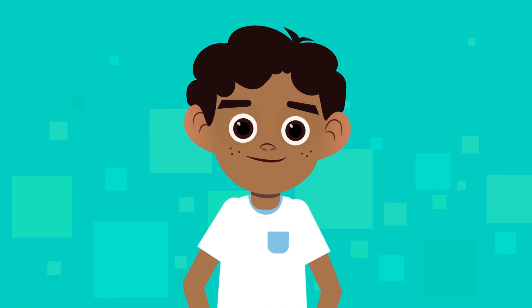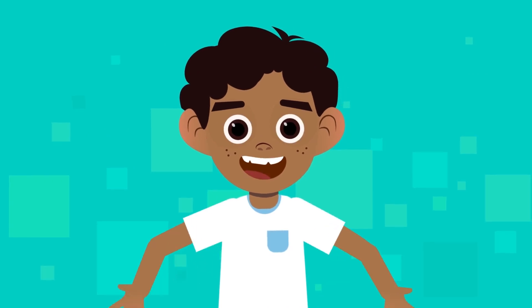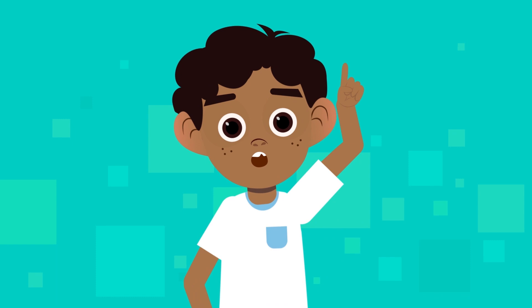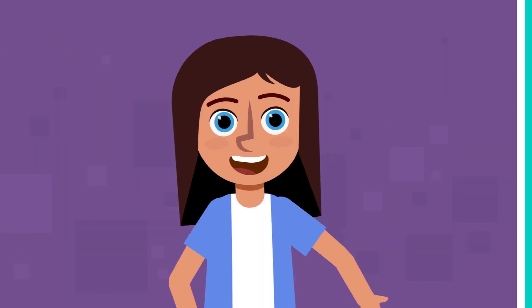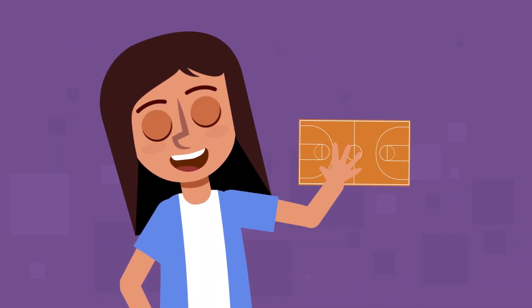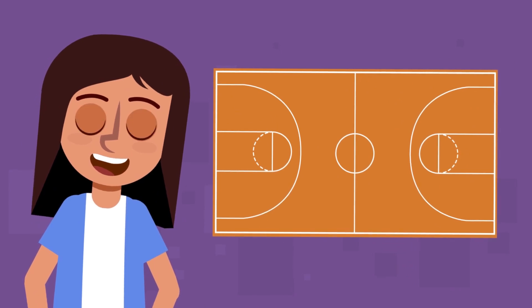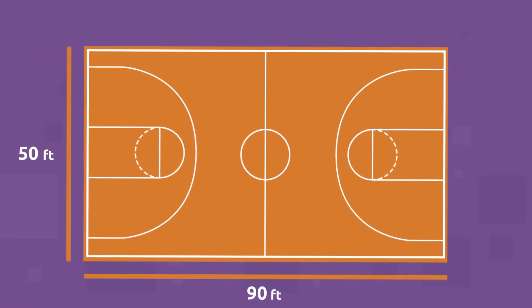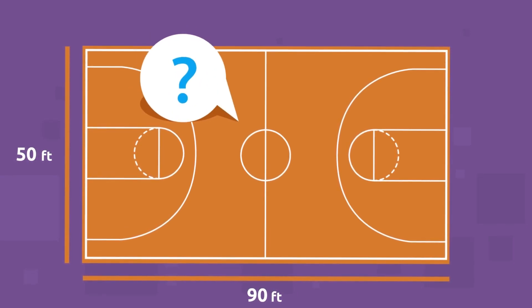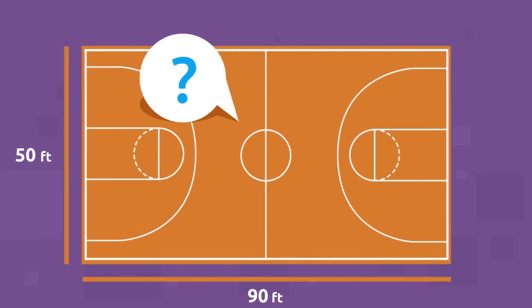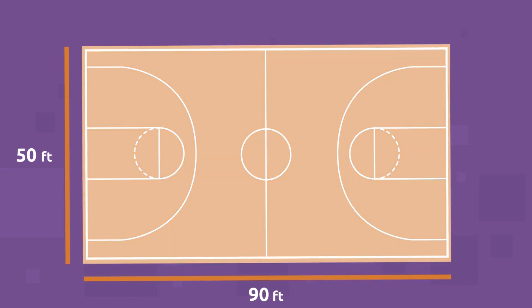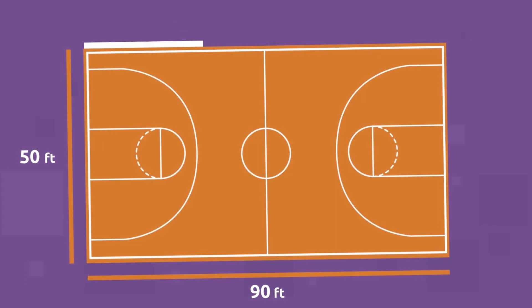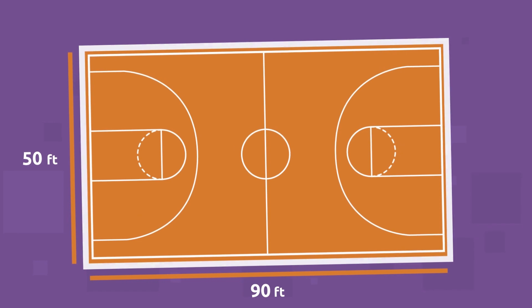Knowing the area of a rectangle is very important. Let's take a look with a real-life example. The school principal wants to build a basketball court in the playground. The court has a length of 90 feet and a width of 50 feet. What is the area she will need to build the basketball court? To find out, we calculate the area of the court — and as you can see, it is a rectangle.